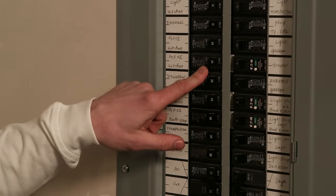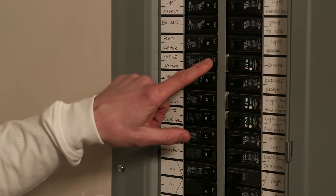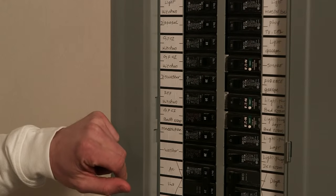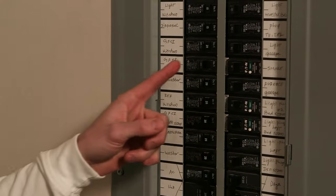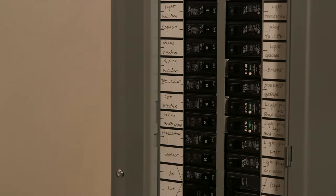Now if one of the breakers were to trip inside the house, you'd see this would be clicked over to that side. If you come down here, all you need to do to reset it is click it back over there.